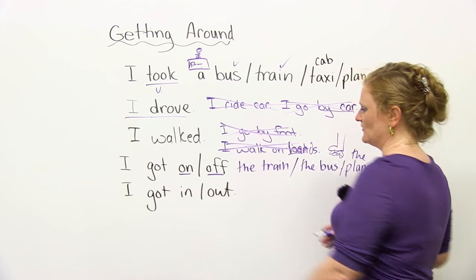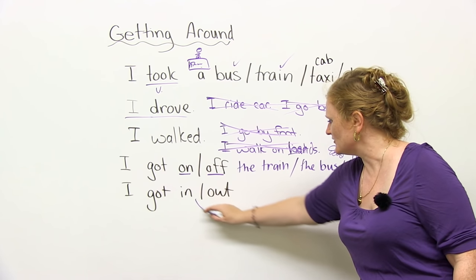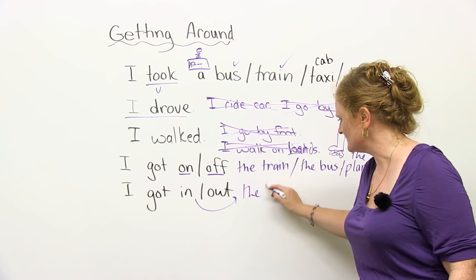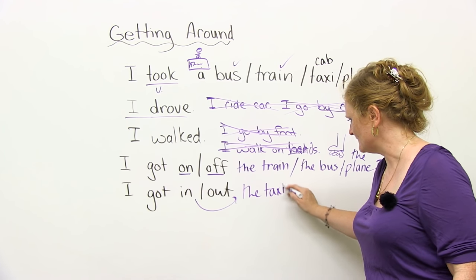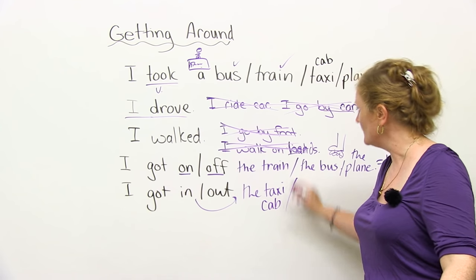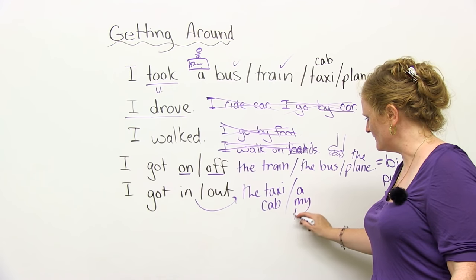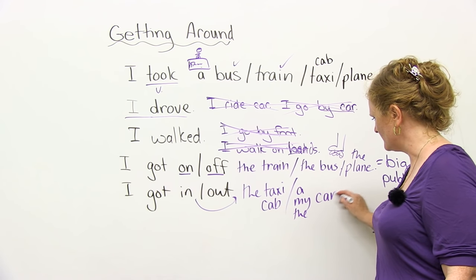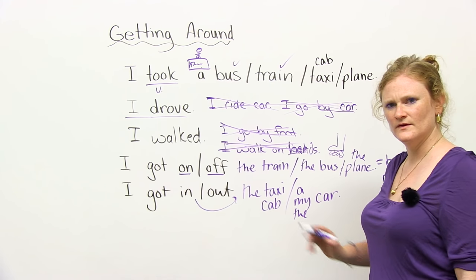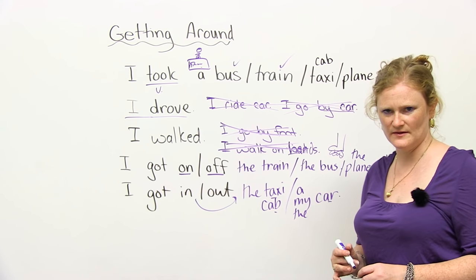In and out. So I got in or I got out. You're going to say I got in the taxi. Or you can say, same word, I got in the cab. Also you can say I got in a, my, or the car.